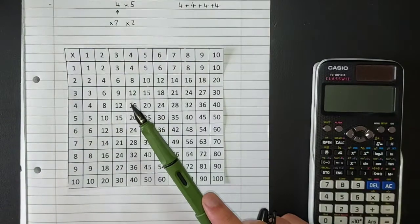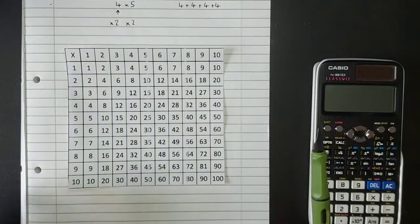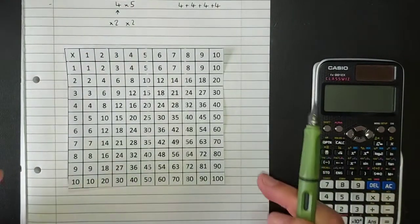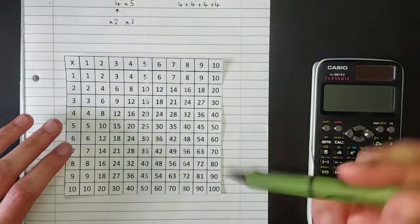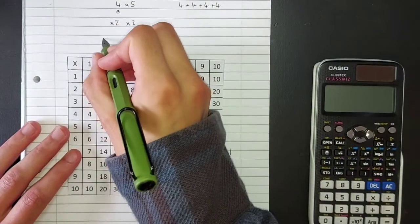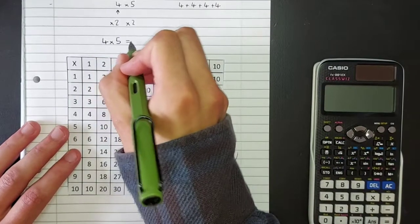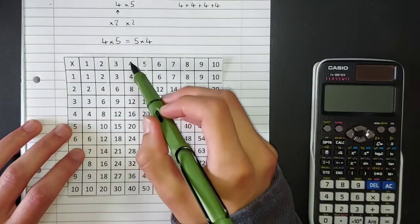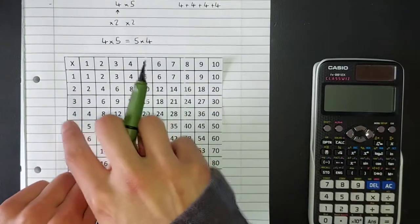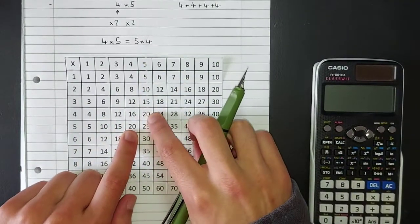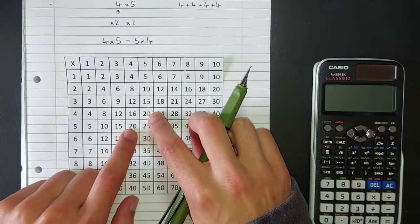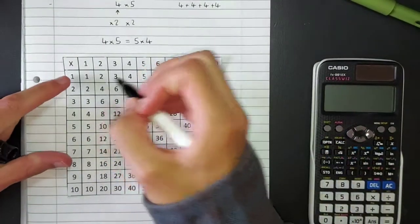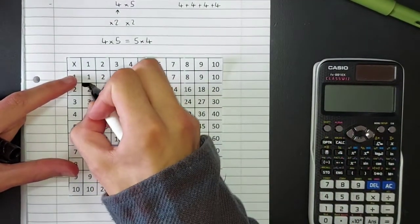The grid is huge, so the first thing to realize is you can cut it almost in half straight away if you recognize that multiplication is commutative. Four times five equals five times four — both give 20. So you don't need to remember both of these calculations; if you can work out four times five, you can work out five times four. That lets us cross off half the grid immediately.